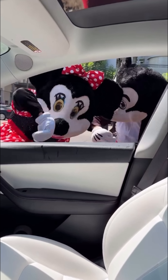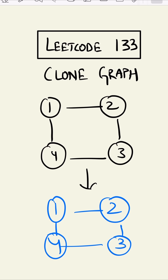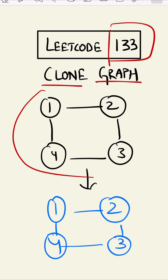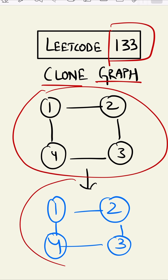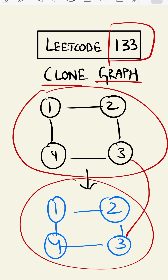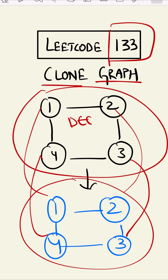This is LeetCode 133. In this question we have to clone our graph. Suppose this is our given graph and we have to clone it. The nodes are not the same — they are what we call a deep copy, meaning separate nodes.